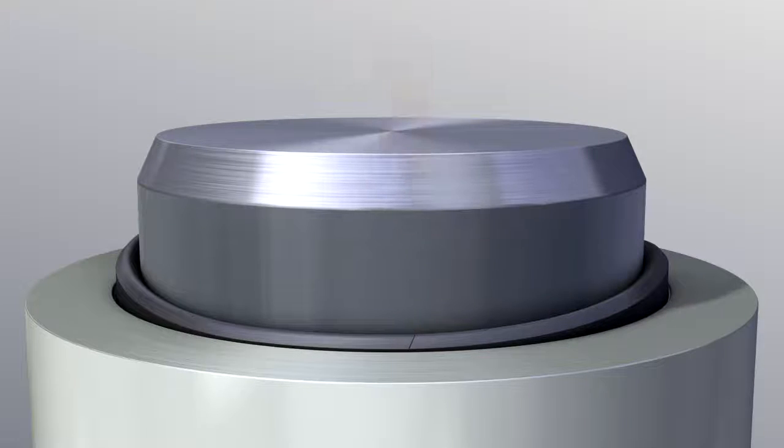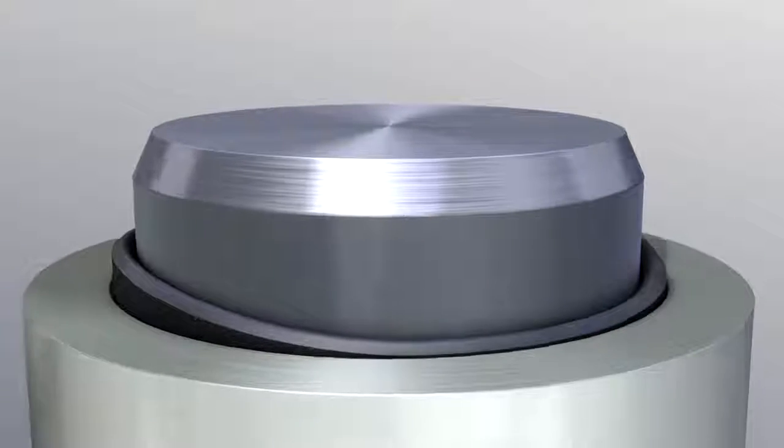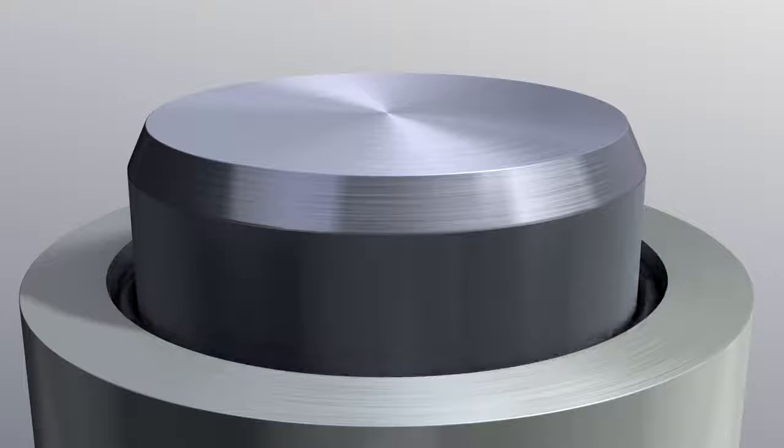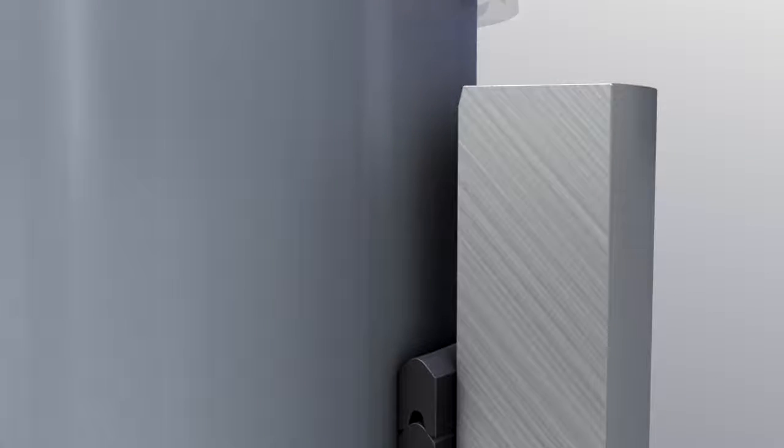This will ensure that the seal ring can be pressed relatively easily into the housing despite the over length of the seal. Should a loop be formed over a short distance only, assembly will be much more difficult. Once the entire circumference is inserted, the ring should then be pressed simultaneously to its final position.